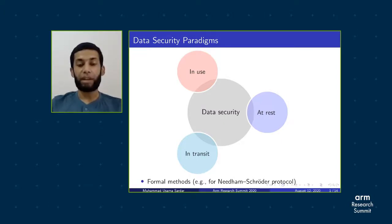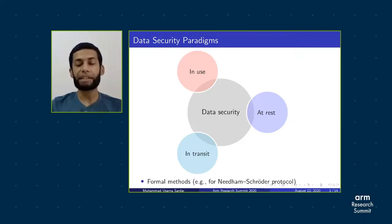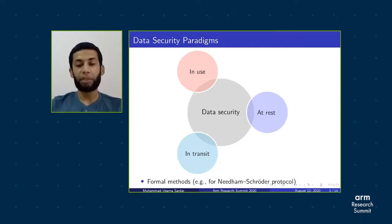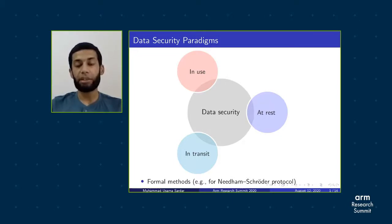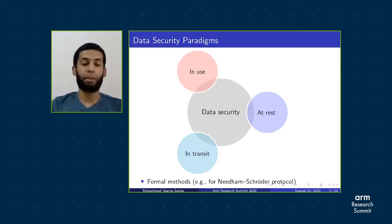Formal methods are well-defined mathematical techniques which prove that the mathematical model of a system satisfies well-described, precise requirements. For example, they have been used widely for the verification of security protocols such as the Needham-Schroeder protocol, where a bug was discovered after 17 years of its proposal using formal methods.